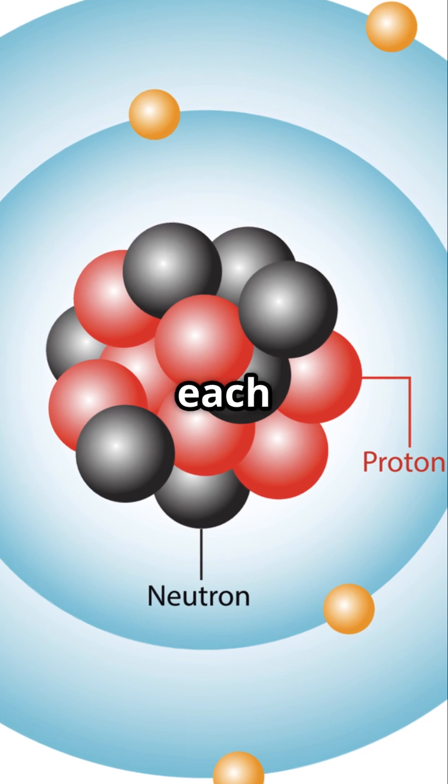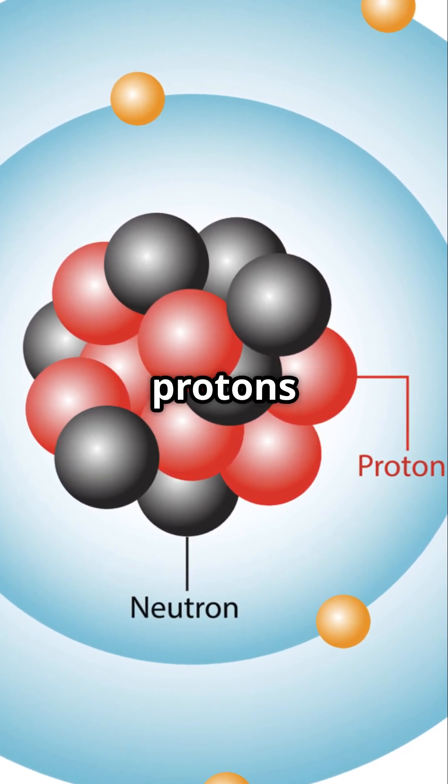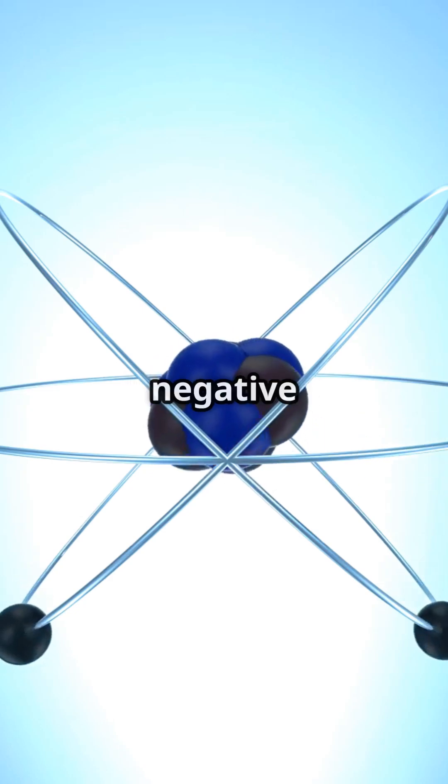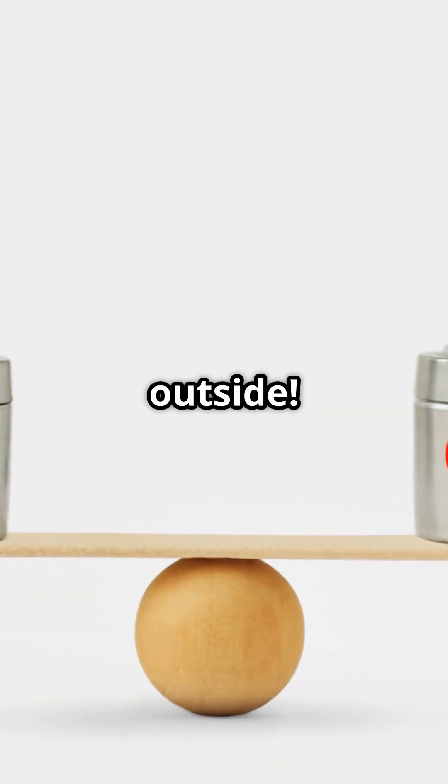Zooming in, each atom has a center called the nucleus, made of protons, positive, and neutrons, neutral. Electrons, negative, zip around the outside.